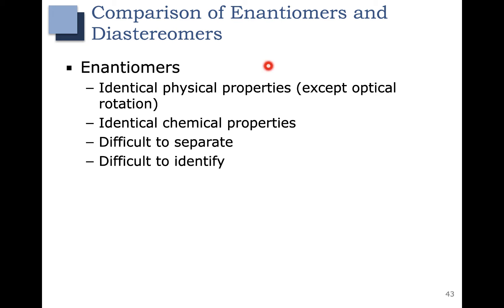All of this is true for an achiral environment. If you are able to add some chirality to your environment, then this might change. For example, if you can add a chiral element to your reaction, then your enantiomers might have different chemical properties. Also, if you can add a chiral element to a separation, then you might be able to separate your enantiomers.